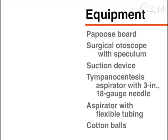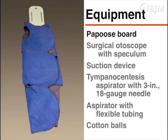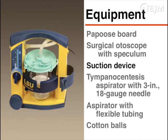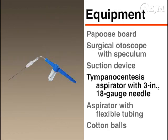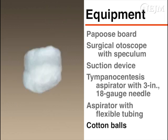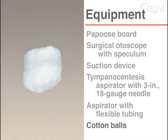The following equipment is necessary: a papoose board, a surgical otoscope with speculum, a suction device, a tympanocentesis aspirator with a 3-inch 18-gauge needle, a second aspirator with flexible tubing, and cotton balls.